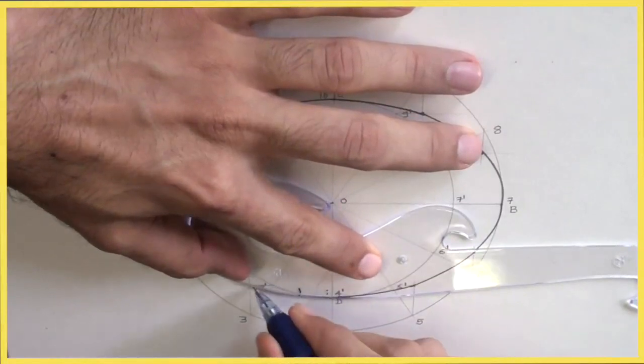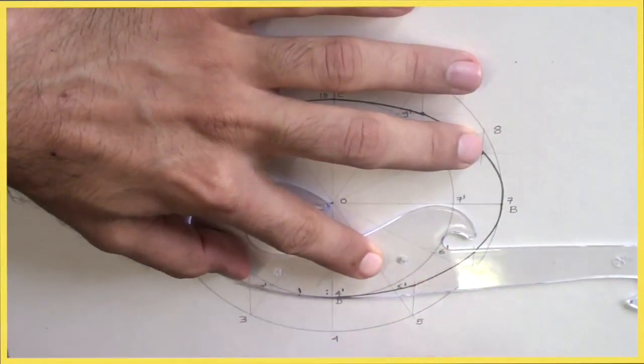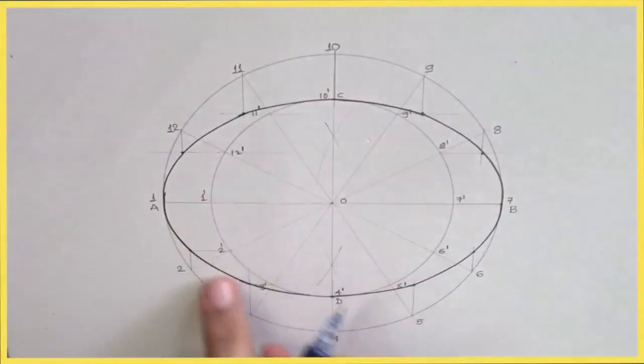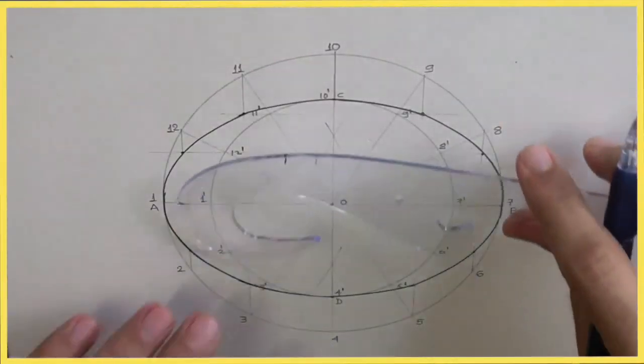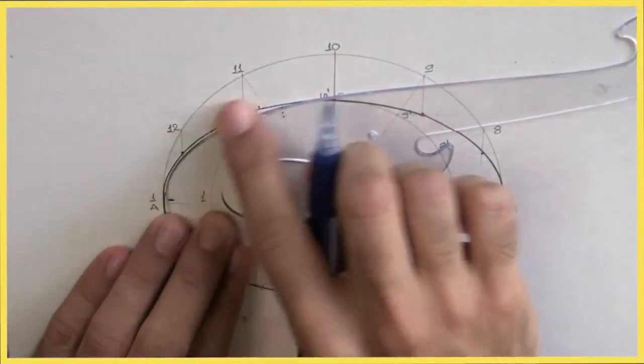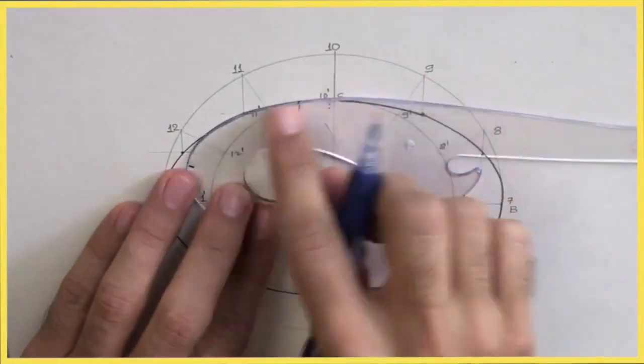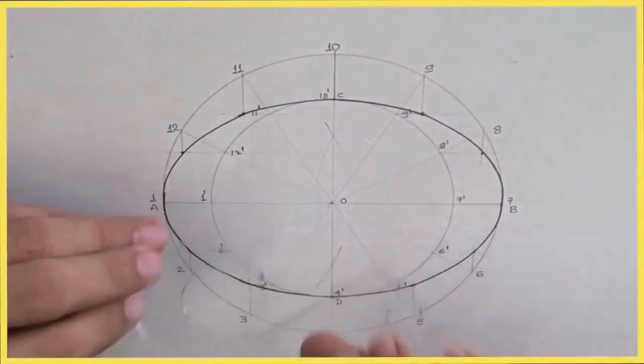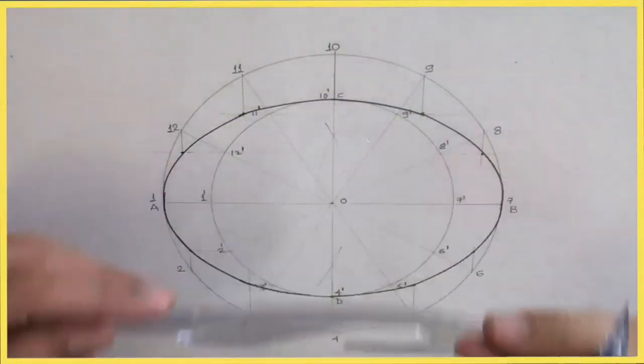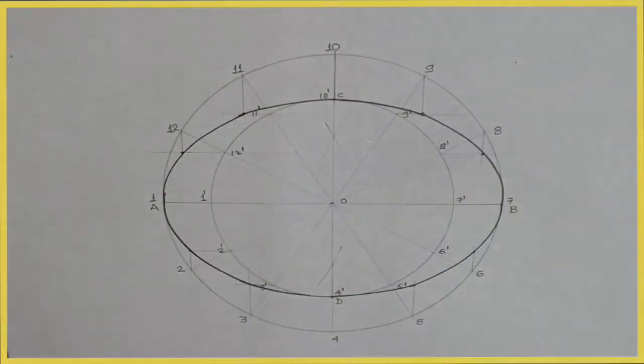So, this is how you will get ellipse by using French curve. Remember that. We can do it freehand also. And we can use French curve. So, the method is same. First, try to get a quarter part and then you just flip. Thank you.